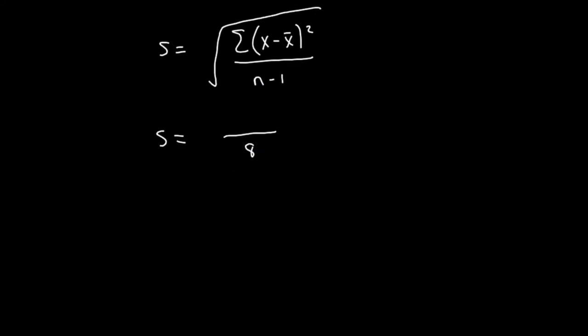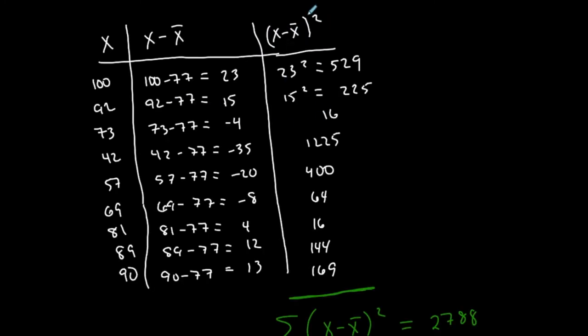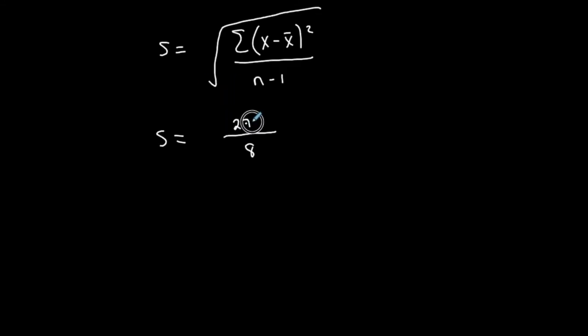Then we said the numerator represents the sum of each value minus the mean squared. And that represents this column from our table, the sum of each value minus the mean squared, 2788. So that's the numerator of that fraction. And then I just have to take the square root of that. So I'm almost done finding my sample mean.